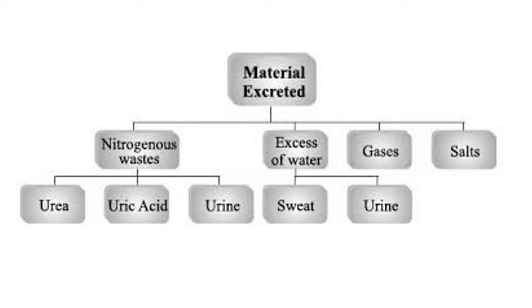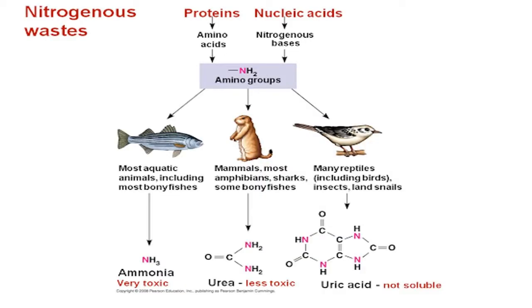water, salts, urea and uric acid. Accumulation of these wastes beyond a certain level inside the body is harmful to the organism. The excretory organs remove these wastes. This process of removal of metabolic wastes from the body is termed excretion.